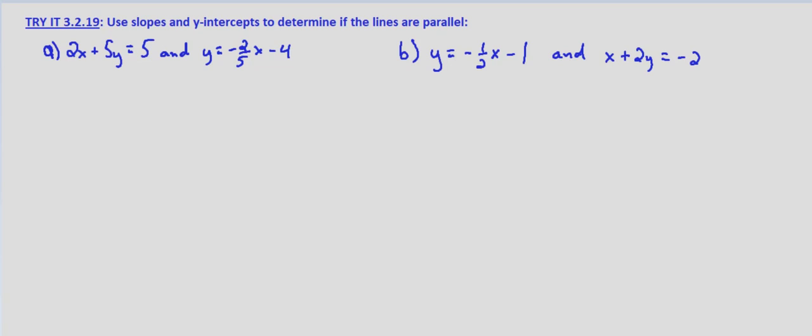In this case, we're just wanting to know, are the lines parallel? So to determine if the lines are parallel, their slopes need to be the same. If they're not the same, then the lines are not parallel.